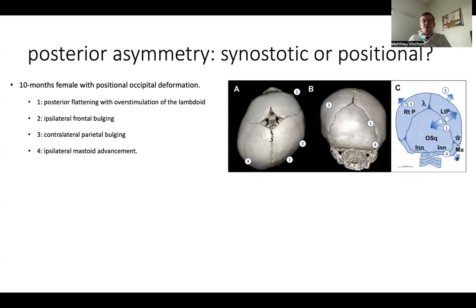When we see a posterior asymmetry of the calvaria, we have to decide whether it is synostotic or positional. Here you can see a typical parallelepipedic shape of positional deformation because the lambdoid suture is overstimulated, with overdevelopment in the occipital and parietal region, and bulging in the anterior parietal aspect and on the contralateral side because of overgrowth, and also a frontal bulging corresponding to the parallelepipedic shape of the skull.